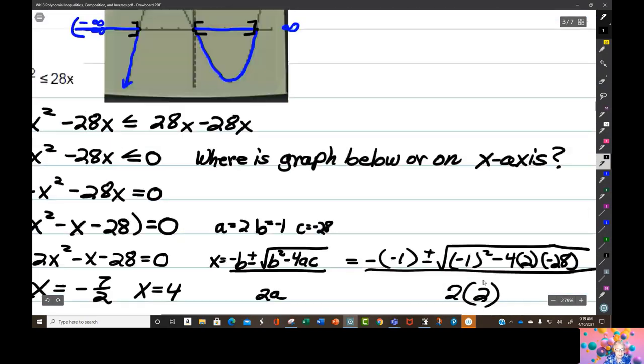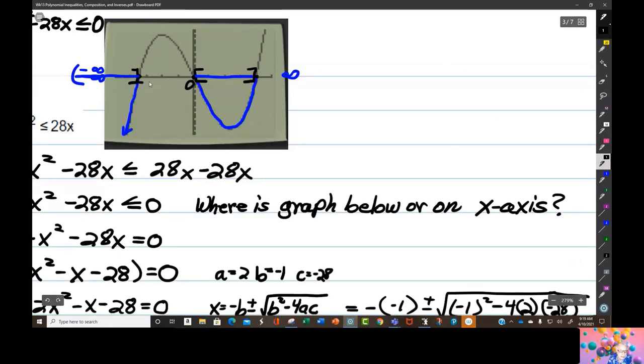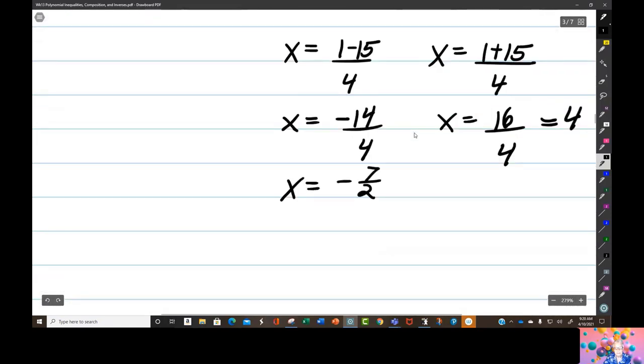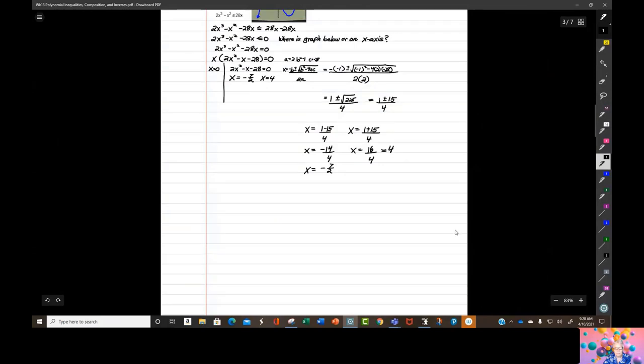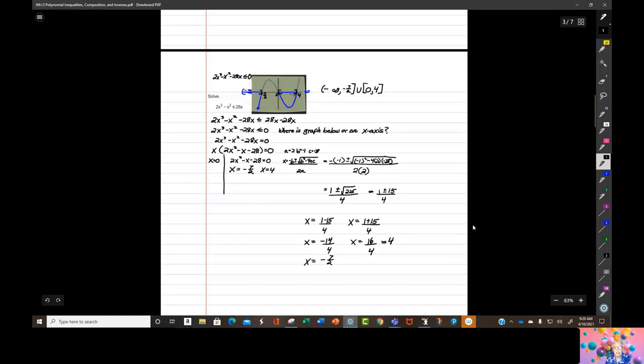So what do I have here? x equals negative 7 over 2, and x equals 4. So now we can put identities on these. This is 0, this is negative 7 over 2, well it's the best I can do, and this is 4. So our solution should be negative infinity to negative 7 over 2, bracket, union, bracket 0 to 4. And brackets again because of the line under there. We're looking for on the x-axis and below the x-axis. Ah, good time for a break.